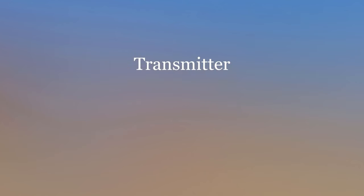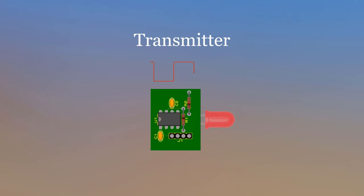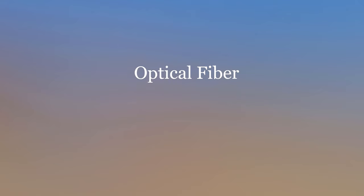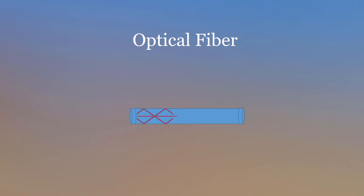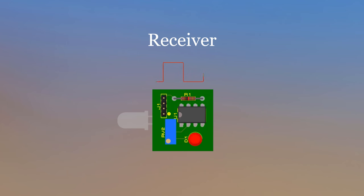The first step in optical fiber communication is to convert electrical signals into optical signals. This can be done by sending a signal through an LED or laser diode, or through a modulator that uses an electrical signal to control the intensity of light emitted from a light-emitting diode. Once converted, the optical signals are transmitted over long distances through free space or using materials like plastic or glass as a guiding medium. In the final step, the optical signal reaches the receiver, where it's transformed back into an electrical signal, enabling retrieval and processing of the original data.